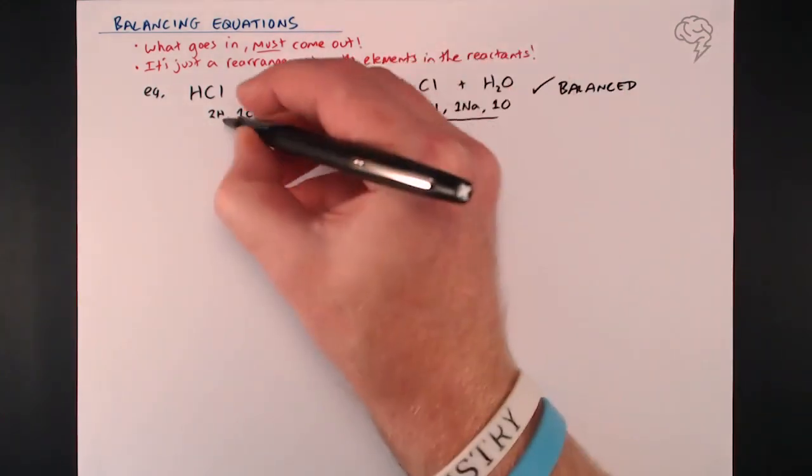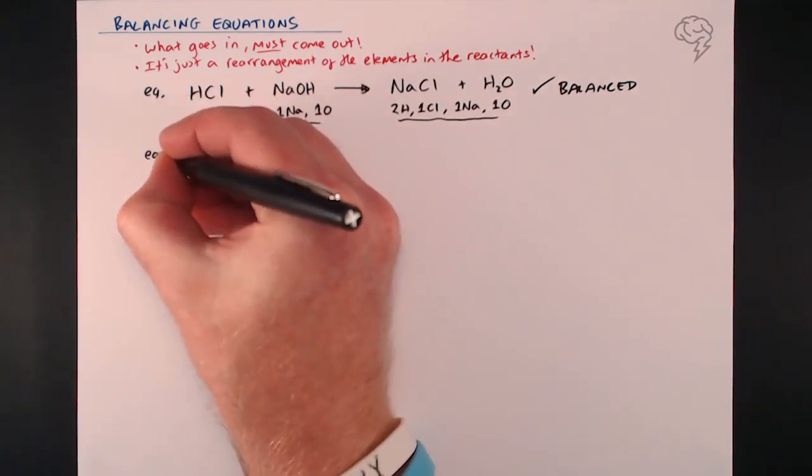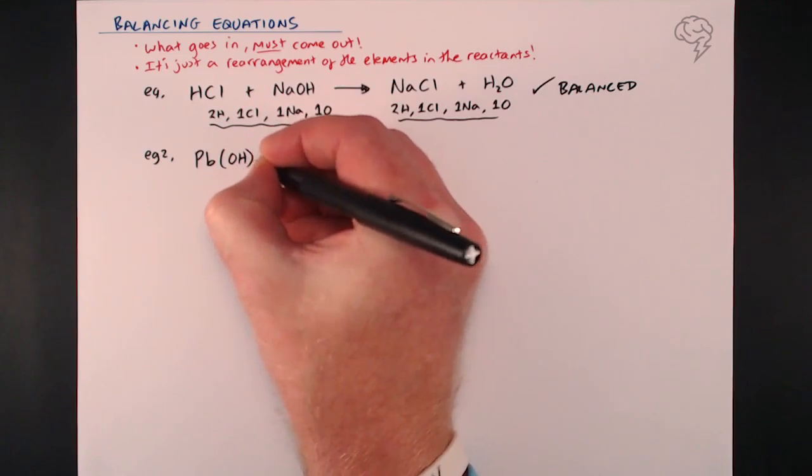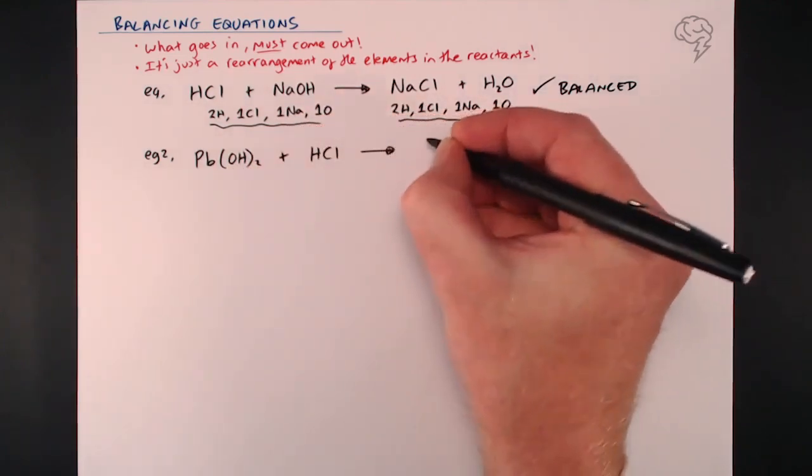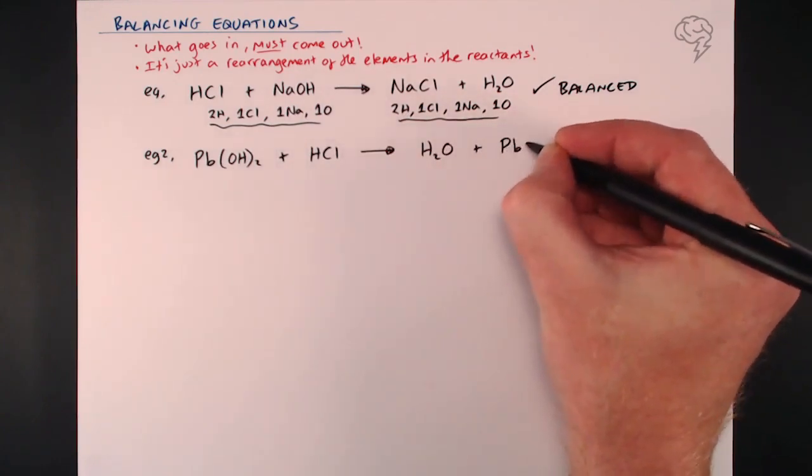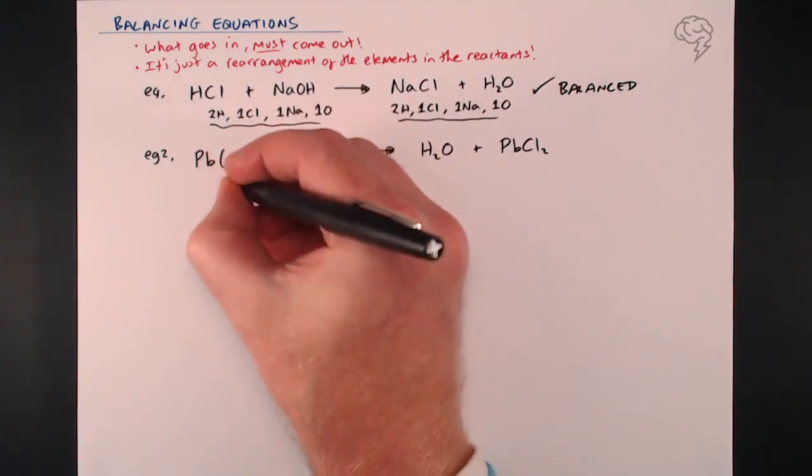This is a balanced equation because all of these and all of these are exactly the same. Let's take a look at an example where we actually need to do something. We're going to take some lead hydroxide and react that with hydrochloric acid again, just because we can.